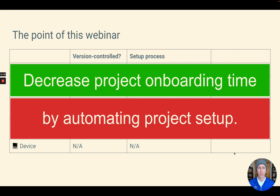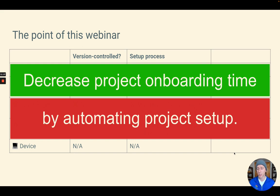Project onboarding time can be the difference between having a lot of open source contributors or very few. If people can clone the codebase and immediately write effective, high-quality code that they can push in a pull request, you're going to get a lot more high-quality pull requests. On an enterprise team, onboarding, offboarding, employee churn, and contractors can make or break the ability of a team to ship features. If you can onboard someone quickly — even someone from another team inside the company who doesn't have the codebase configured — that's a huge win.